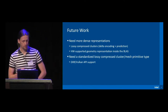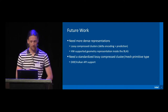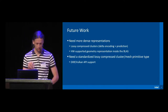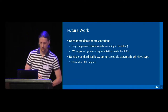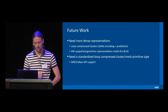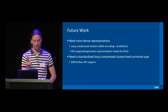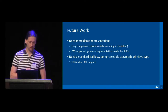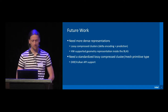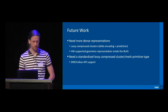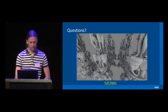Quickly, in terms of future work: our lossy compression scheme is probably not that advanced, so we should use something better — something like data encoding with prediction or hierarchical encoding. The same goes for the hardware-supported geometry representation in the BLAS. One important point: these two don't have to be the same, as we've shown today — we can convert from one to the other on the fly per frame. We should also standardize the lossy compressed cluster mesh primitive type to make it vendor-agnostic, meaning adding a special DXR / Vulkan API extension. With that, I'm happy to take questions.